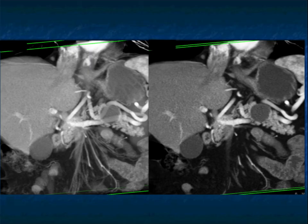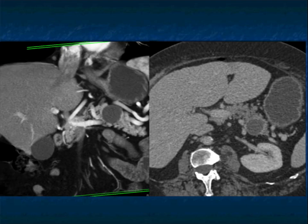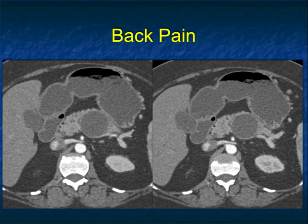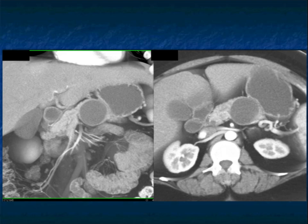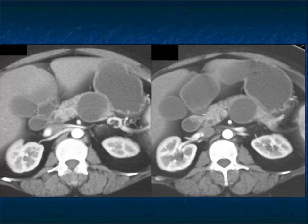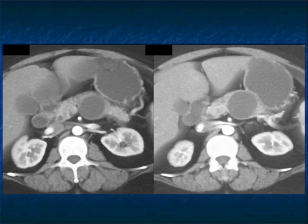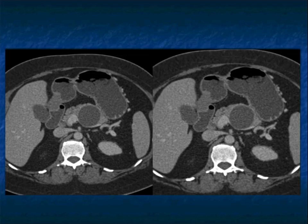I'll take you through the images, which show the very good definition of the cystic lesion. No septations in this case, no nodularity, no enhancement. Or this case — patient with back pain, that's why the patient presented. I don't think the back pain was related to the lesion. But there it is: classic location, body-tail junction, subtle rim enhancement, no true septations, no nodularity, no dilated pancreatic duct. This was an MCN.